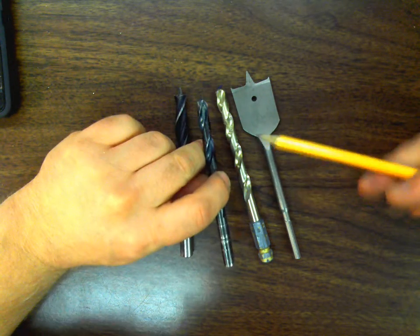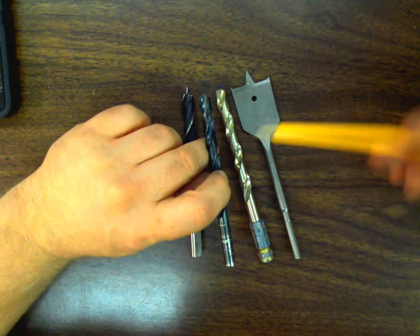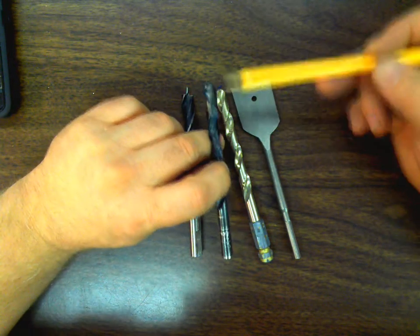So here I have my twist drill bit. In the twist drill bit, we've got three parts. We've got the tip, or the point of the drill right here.